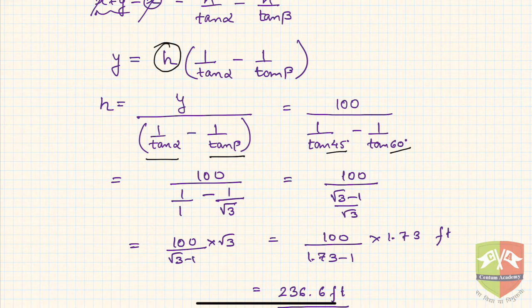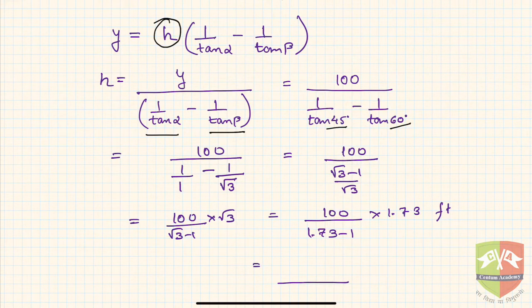After application of this particular knowledge, you will get this calculation: 100 × √3 / (√3 - 1). If you see, this value is nothing but 236.6 feet. Hence, the answer is 236.6 feet.